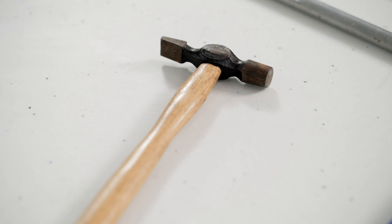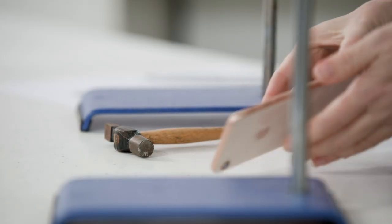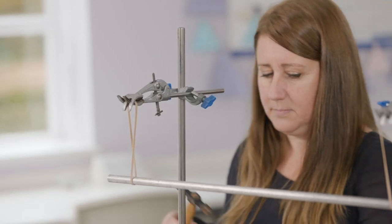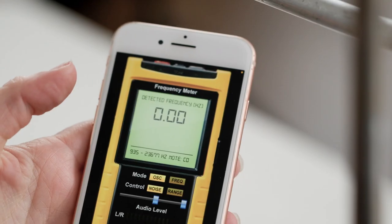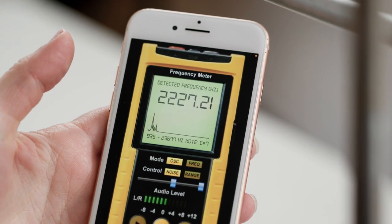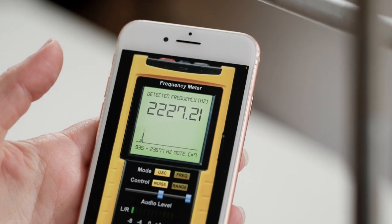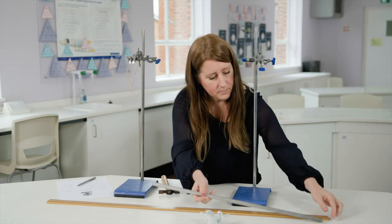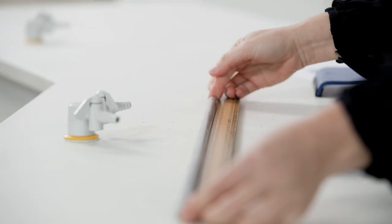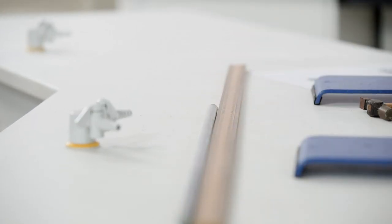You now need to measure the speed of sound in the bar. We do this by hitting one end of the rod with a hammer. At the same time hold your smartphone with a frequency app near the rod and then note down the peak frequency. Finally you need to measure the length of the rod with your metre rule. Doubling this value will give you the wavelength.